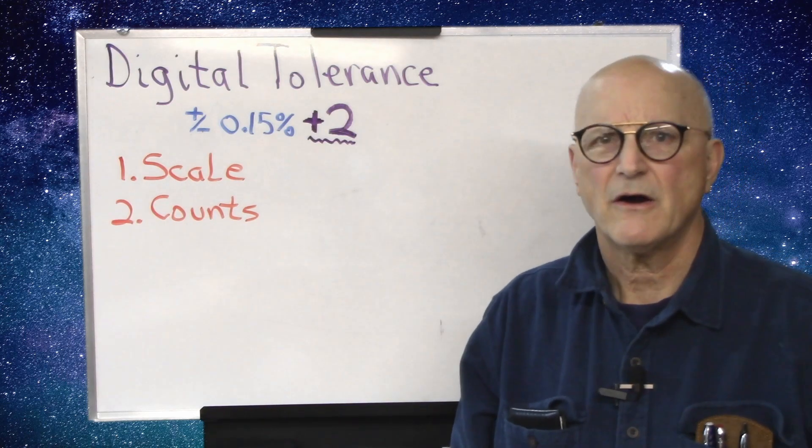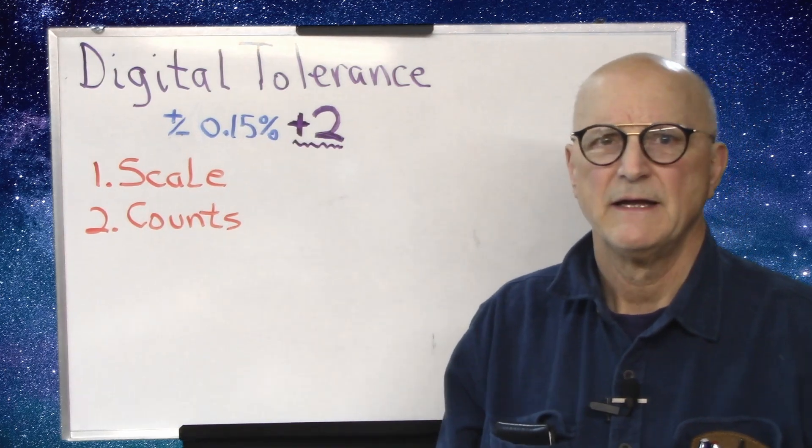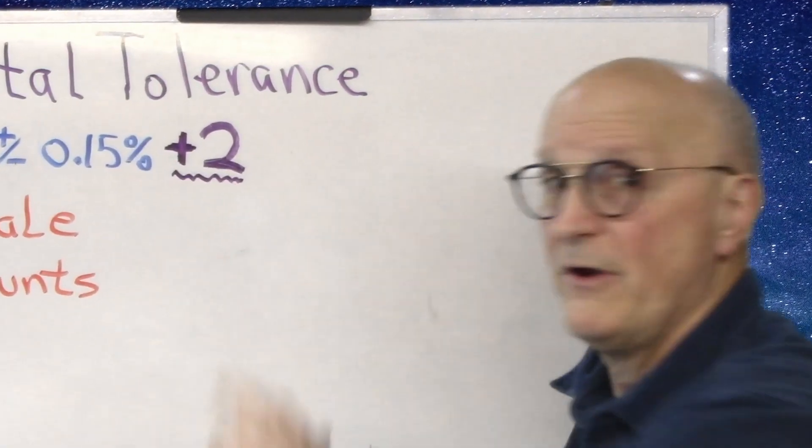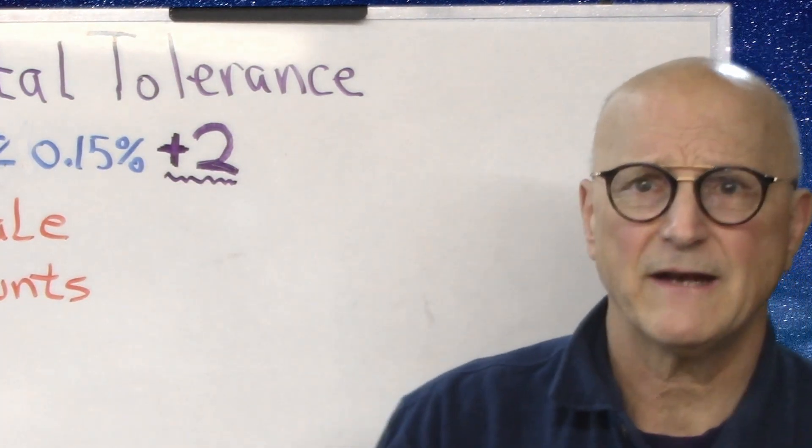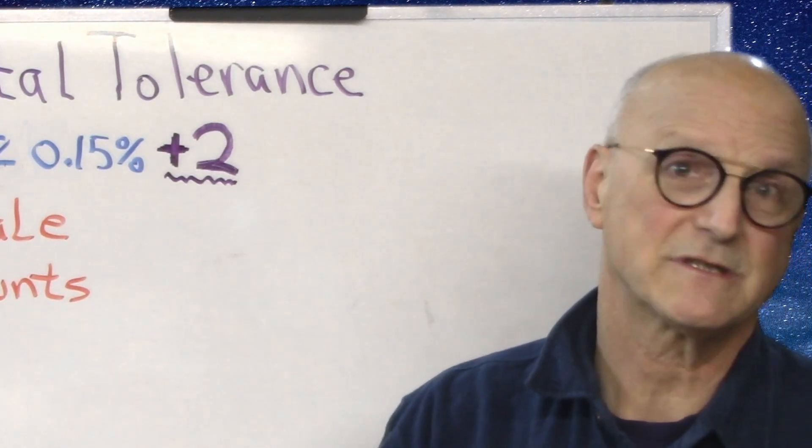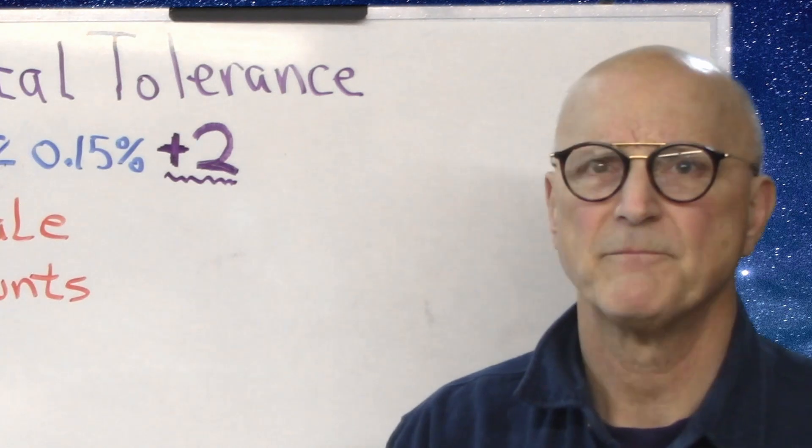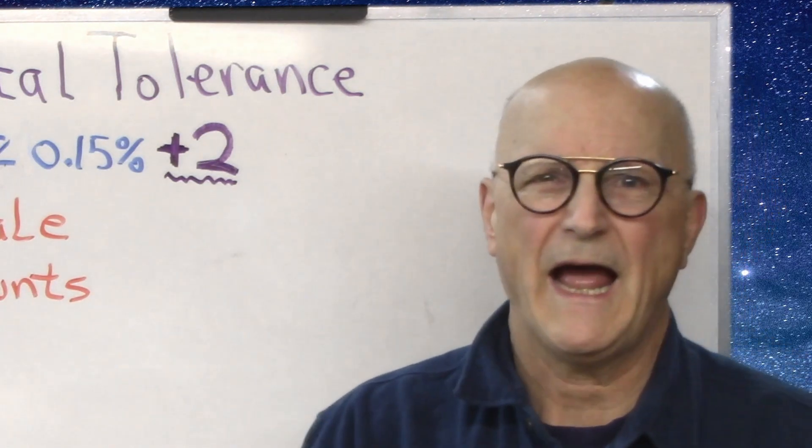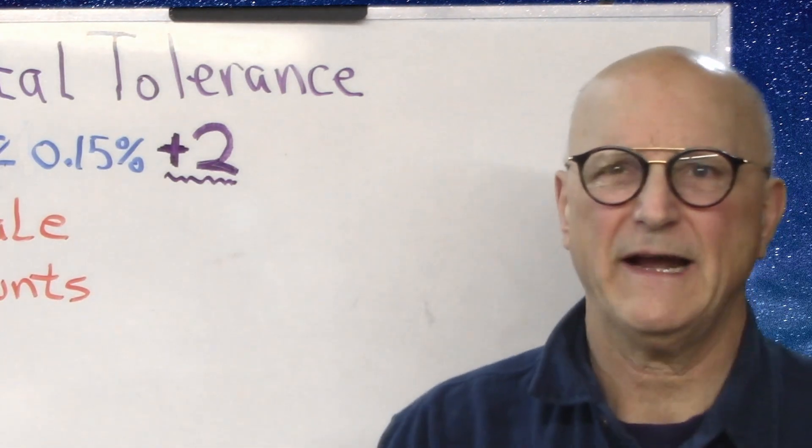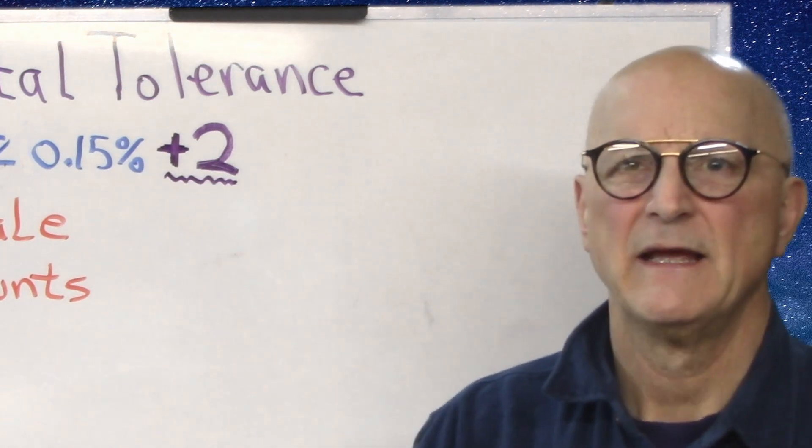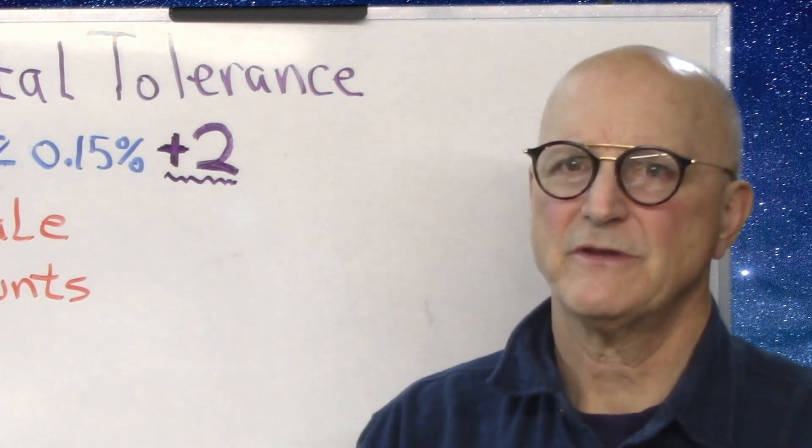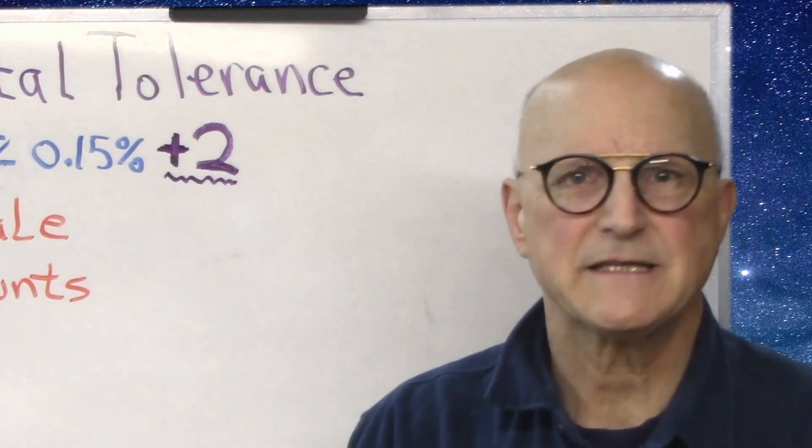Now we come to the harder to understand part. This additional number here represents the number of analog to digital converter counts the measurement might be off by. What is an analog to digital converter count or ADC count?